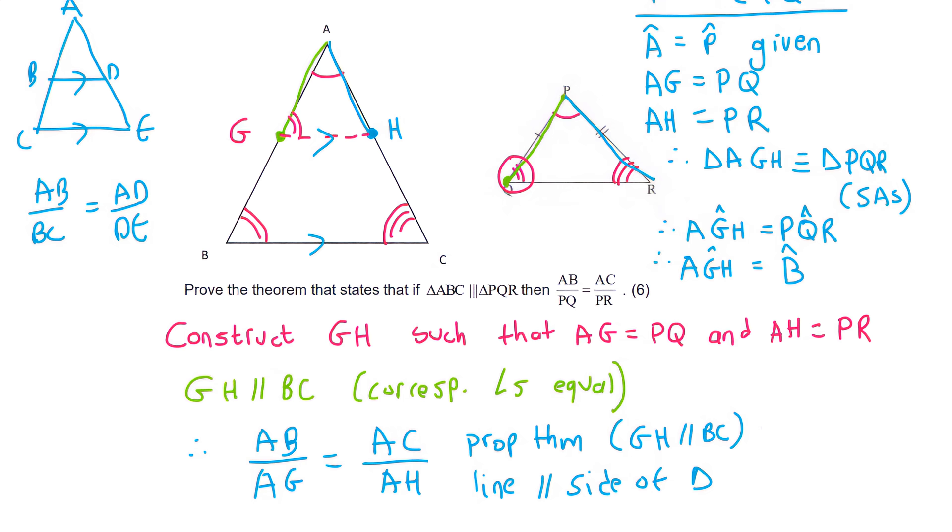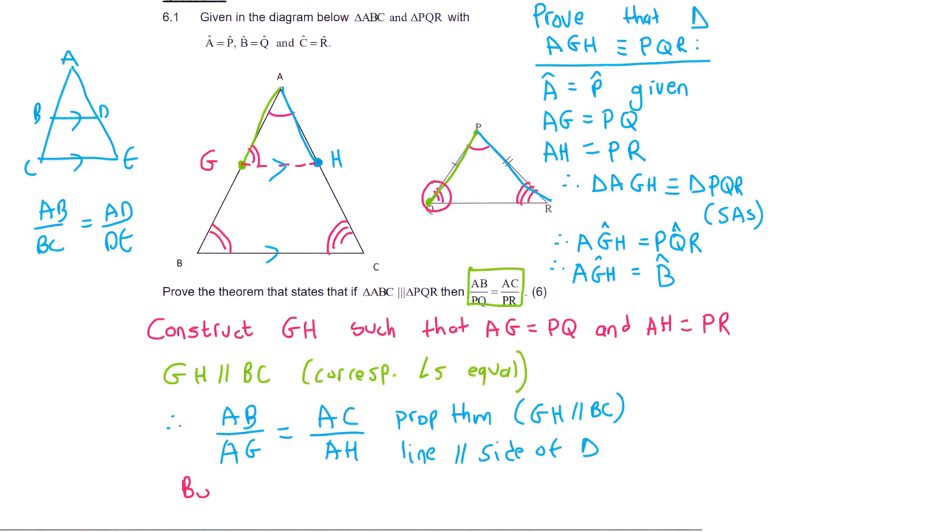Okay, so we're nearly done because now we're trying to get to this. Now we can say, but we know that AG, which is this one, is the same as PQ. And AH is the same as PR. So we can go replace these two now with PQ and PR. And so we can say, therefore, AB over PQ must be the same as AC over PR.